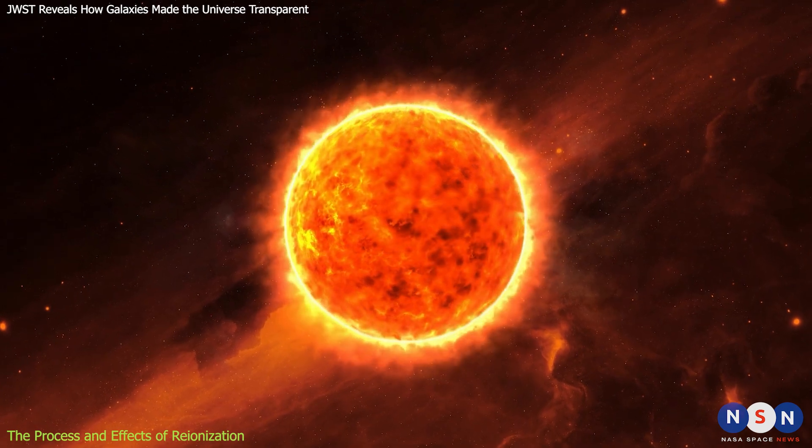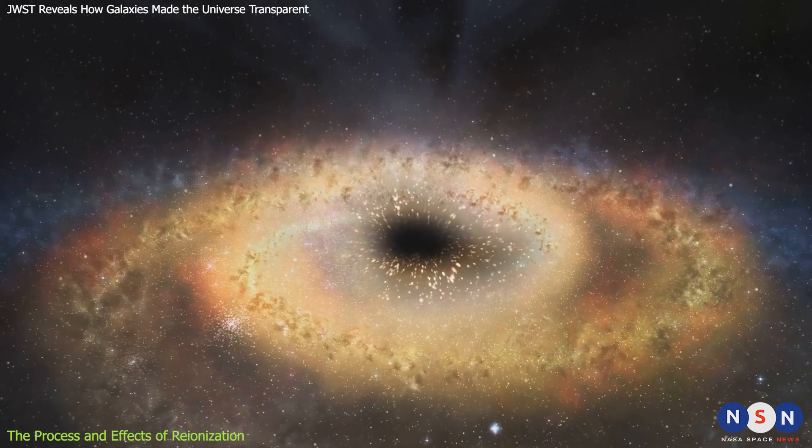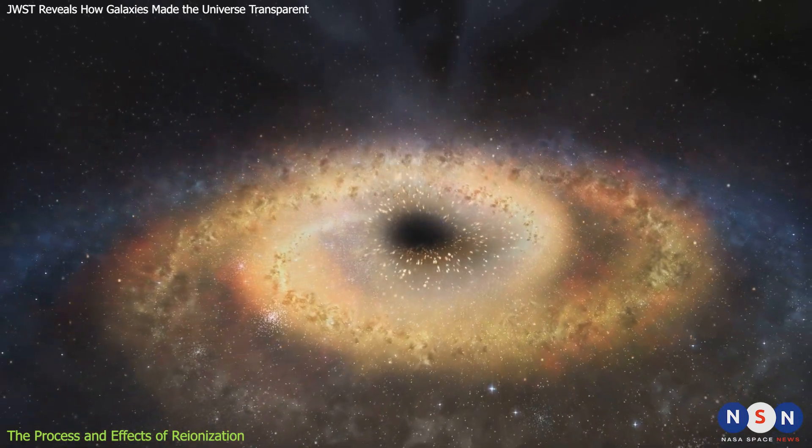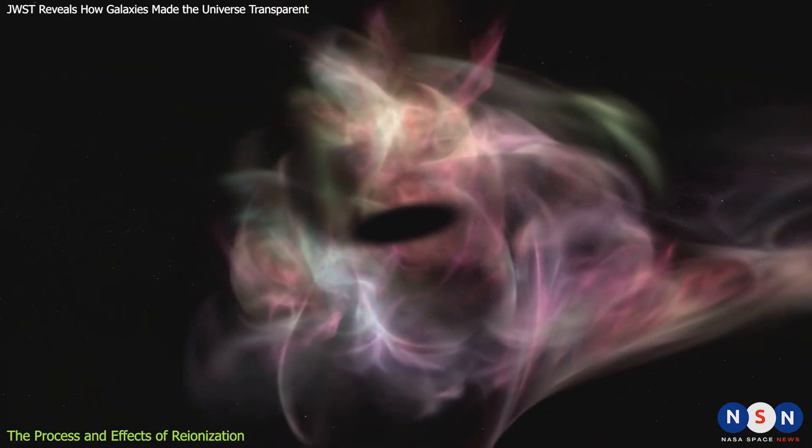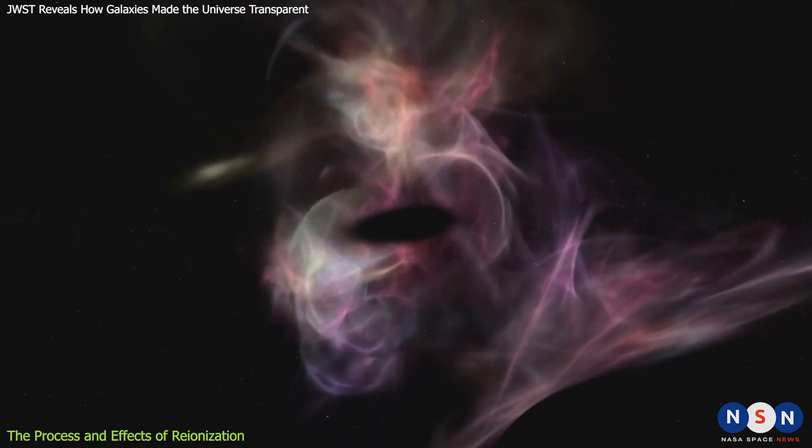Ionizing photons are produced by hot and massive stars, as well as by supermassive black holes at the centers of galaxies. These photons have very short wavelengths, in the ultraviolet or X-ray range of the electromagnetic spectrum.